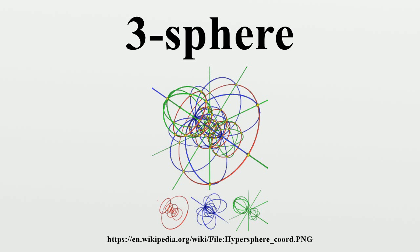Coordinate Systems on the Three-Sphere: The four Euclidean coordinates for S3 are redundant since they are subject to a constraint. As a three-dimensional manifold one should be able to parameterize S3 by three coordinates, just as one can parameterize the two-sphere using two coordinates. Due to the non-trivial topology of S3 it is impossible to find a single set of coordinates that cover the entire space. Just as on the two-sphere, one must use at least two coordinate charts.